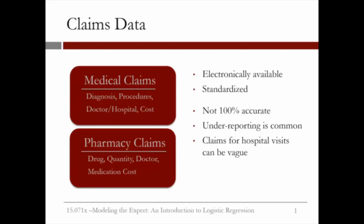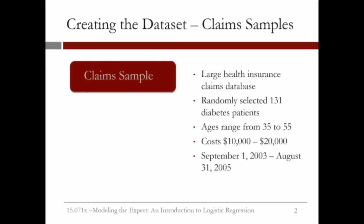In creating a dataset, our objective was to assess healthcare quality. We used a large health insurance claims database and randomly selected 131 diabetes patients. The ages range between 35 to 55, and the costs were in the neighborhood of $10,000 to $20,000. The period in which these claims were recorded was September 1, 2003 to August 31, 2005.